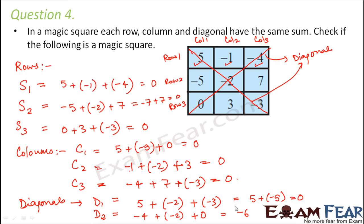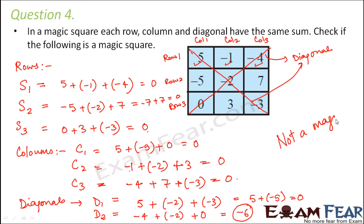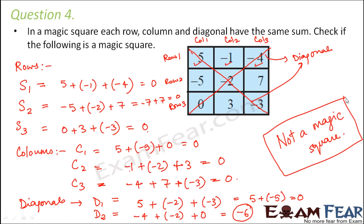We observe that the sum of all rows is zero, the sum of all columns is zero, and the sum of one diagonal is zero — but the second diagonal gives minus 6, not zero. Therefore, this is not a magic square, because for a magic square both diagonal sums must also be equal.